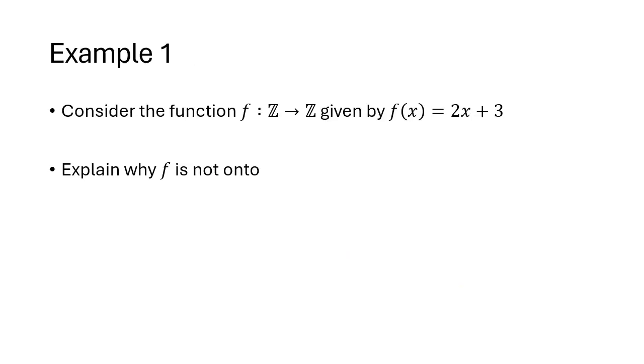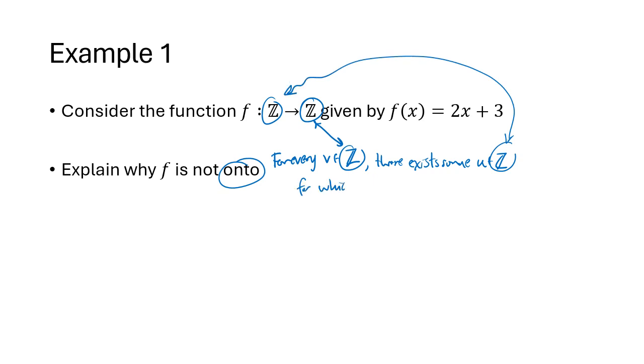Now, to help us understand what onto means, let's practice what we would do if we needed to show that a certain function was not onto. So onto means for every little v in my codomain Z, there exists some little u in my domain Z, for which f(u) equals v. So to show that this doesn't happen, we would have to find some little v in my codomain for which there does not exist a little u in my domain with f(u) equaling v. In other words, an output, something in my codomain, that I can't ever get by plugging anything into my function.